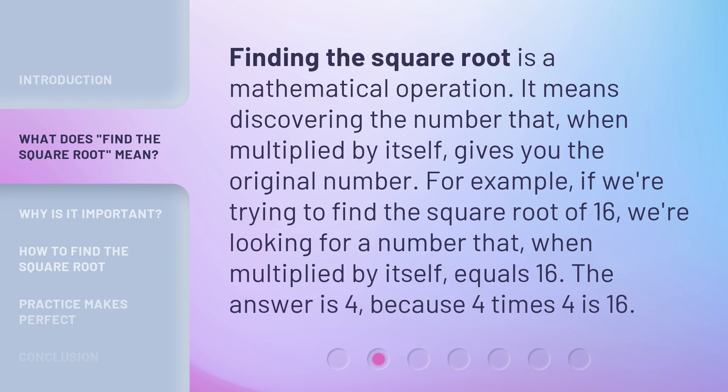For example, if we're trying to find the square root of 16, we're looking for a number that, when multiplied by itself, equals 16. The answer is 4, because 4 times 4 is 16.